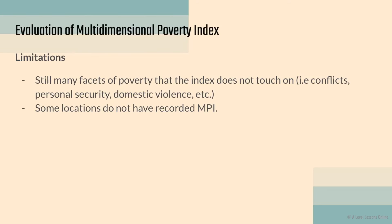Some limitations of MPI include that there are still many facets of poverty the index does not cover. For instance, conflicts, personal security, and domestic violence are not measured. MPI measures tangible things like health, education, and standard of living, but does not touch base on everything.